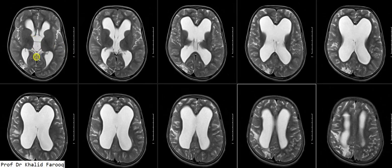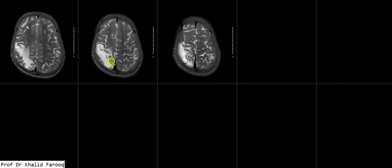There is an area of gliotic changes in the right parietal lobe posteriorly, most probably because of old ischemic insult in the distribution of the right MCA. Here you can see the gliotic area.